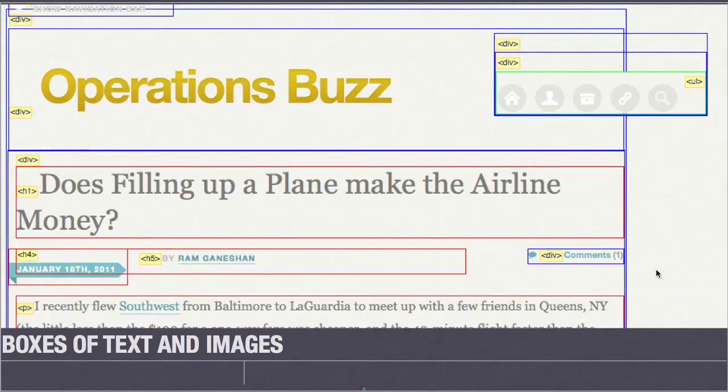And here's one with the web developer toolbar where you can have it show the block level elements. And so these are the block level elements for the page, but also it just shows you how the browser sees them in terms of boxes. It just sees all these boxes here.